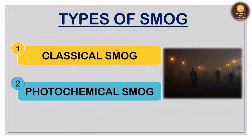There are two types of smog: first is classical smog and second is photochemical smog. We will see the characteristics, sources, and effects of these one by one.